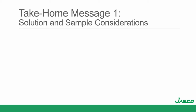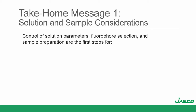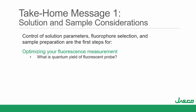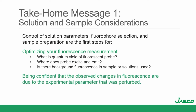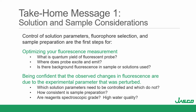Take-home message one for sample and solution considerations: control of solution parameters, fluorescence selection, and sample preparation are really the first important steps in optimizing your fluorescent measurement. What is the quantum yield of the probe? Where does it emit and excite? Does that occur in areas where there might be background fluorescence? It's critical that observed changes in fluorescence are due to experimental parameters that were perturbed. Are reagents spectroscopic grade? What's the water quality? I can't tell you how many times folks have come with questions and they're not using 18 megaohm MilliQ water, or it was stored in a plastic bottle and absorbed the plasticizers. Fluorescence is sensitive — that's a blessing and a curse.